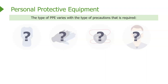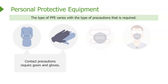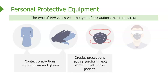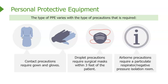The types of PPE vary with the type of precaution required. How many pieces you need to wear depends on what type of transmission precautions the patient is on. Contact precautions require gown and gloves. Droplet precautions require surgical masks within three feet of the patient. Airborne precautions require a particulate respirator and even a negative pressure isolation room.